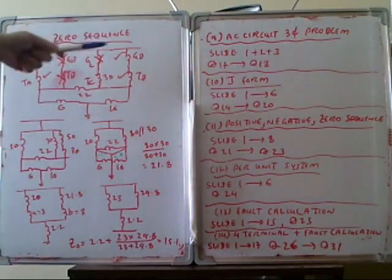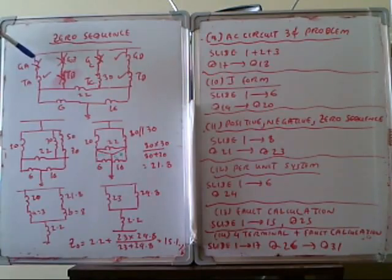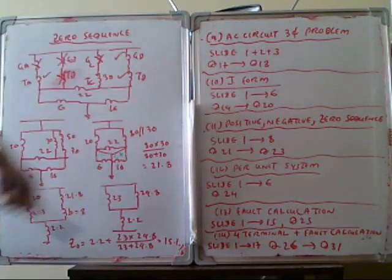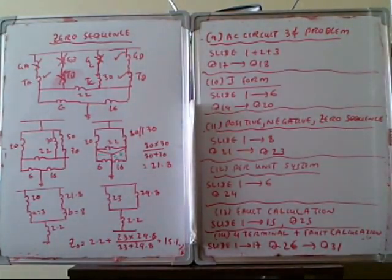So zero-sequence diagram, all the equipment connected to ground are to be included and any equipment that does not have the ground connection are to be removed. So in this way we get the zero-sequence diagram.